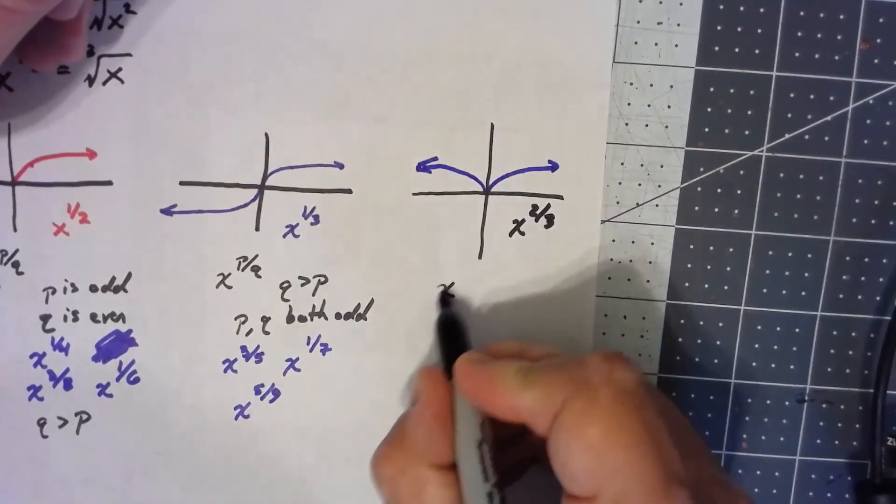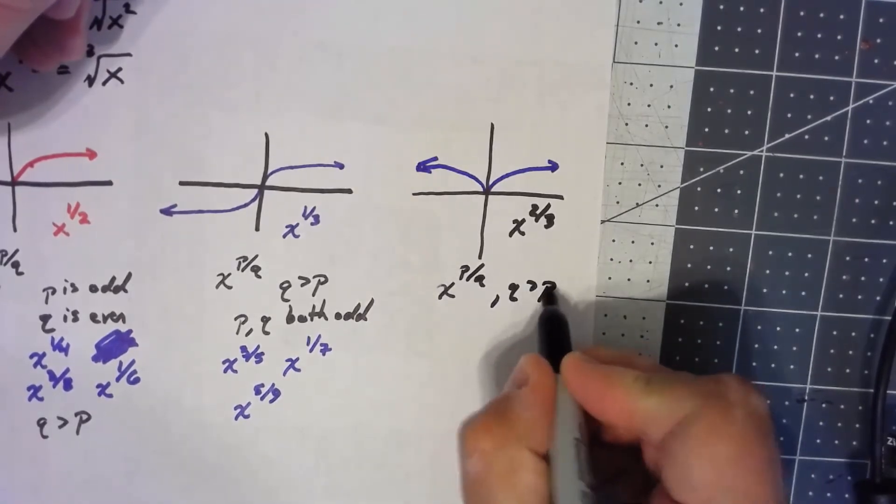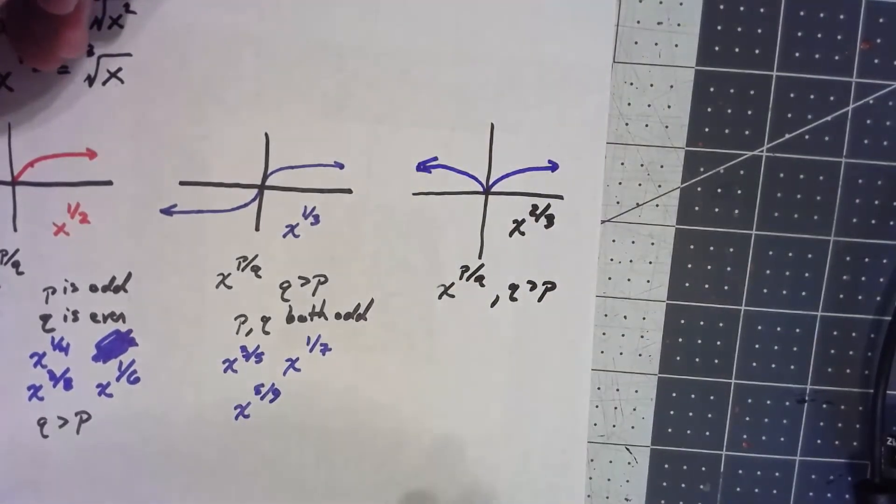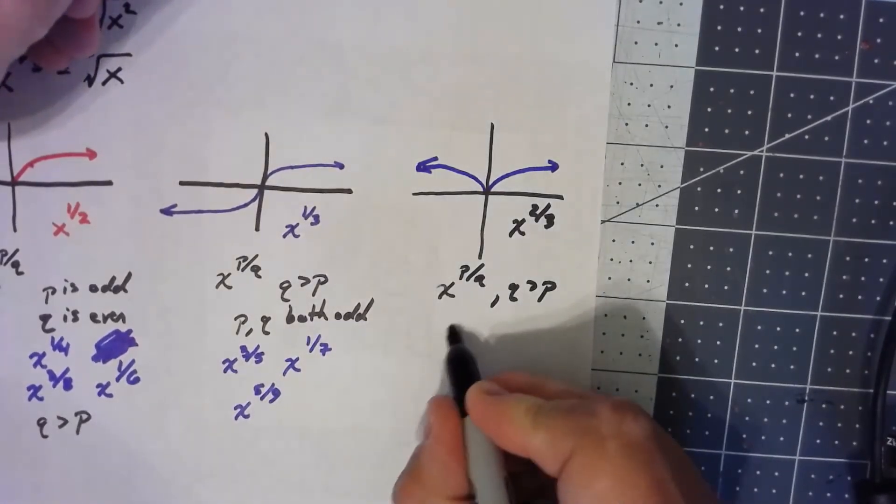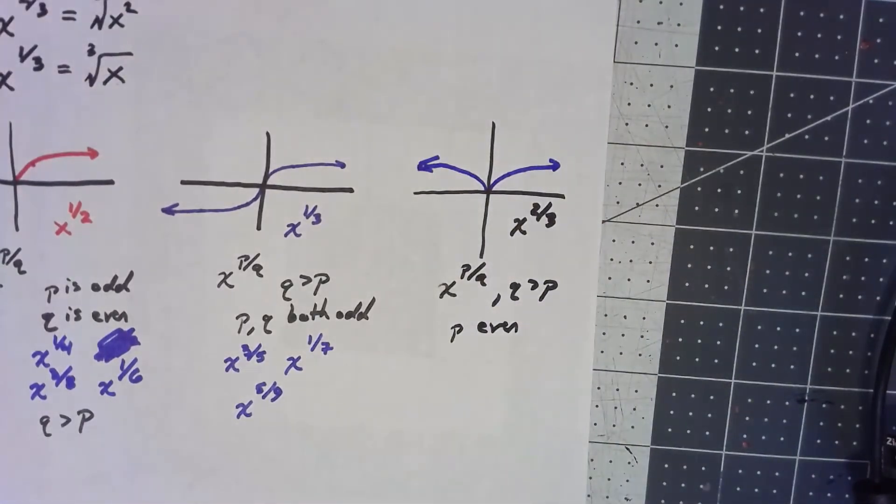Now again, this is x to a fraction, the bottom has to be bigger than the top. So in this case, the only thing that matters is that the top is even. It doesn't matter whether we've got an even or an odd number on the bottom, as long as the top is even.